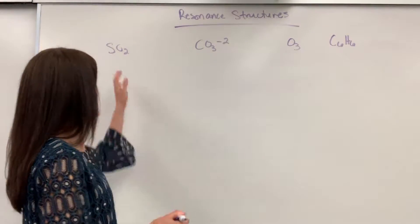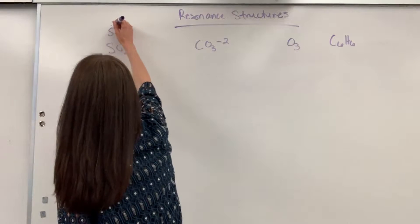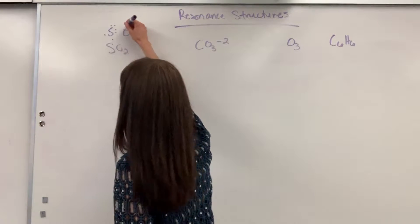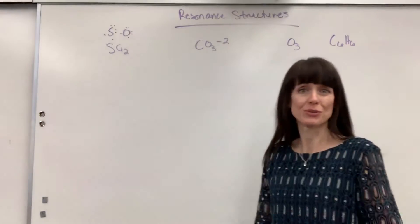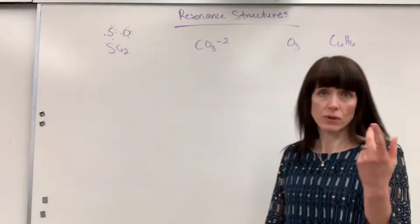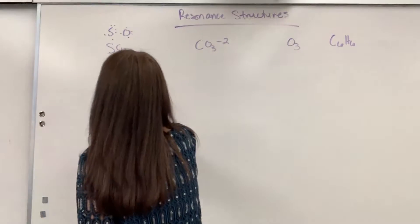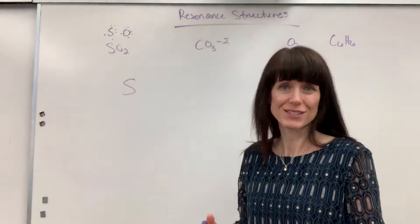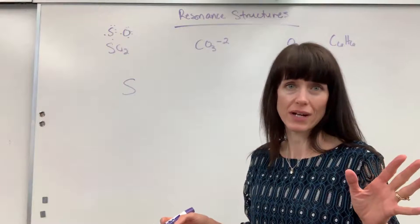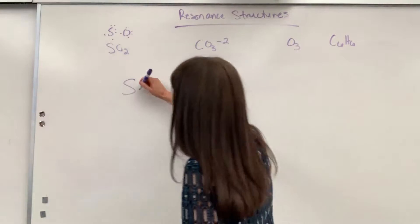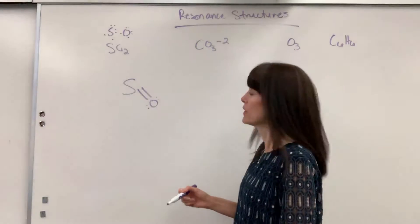We're going to start with SO2. Sulfur has six valence electrons; oxygen has six valence electrons and we've got two oxygens. Because we only have one sulfur, I'm going to make that the central atom. Oxygen needs two electrons, so I'm going to do a double bond right off the bat to take care of one oxygen — sharing two electrons with it.